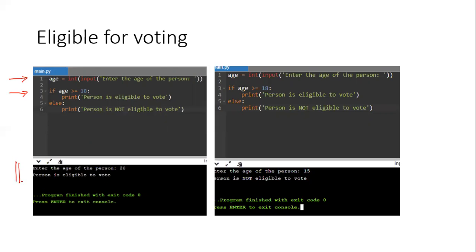And this is where we did some testing. Enter the age of the person. The age of the person is 20 and the output is eligible to vote. In the second example, it's the same program. This time round if we had to input 15 the output is person is not eligible to vote.